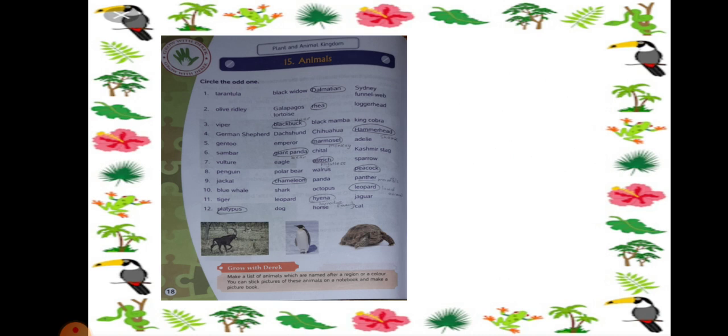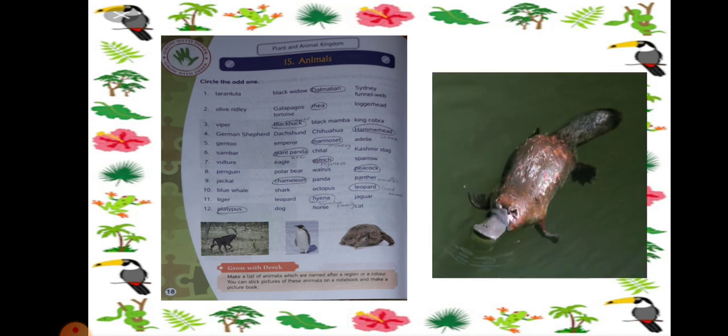Next number 12: Platypus, Dog, Horse and Cat. So here Platypus will be the odd one out because it is the one which lives in water and the rest live on land only. So that is why Platypus will be the odd animal out here.